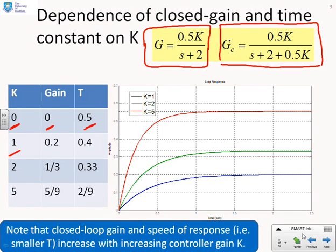K equals 2: gain a third, time constant 0.33. K equals 5: gain 5 ninths, time constant 2 ninths. What do you notice? As K increases, the steady-state gain increases gradually, and the time constant gets faster.